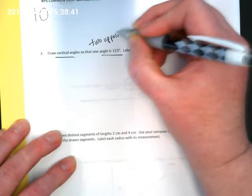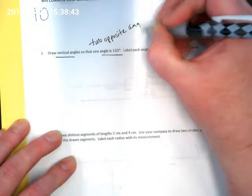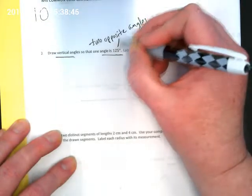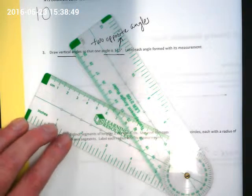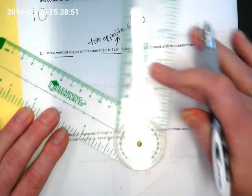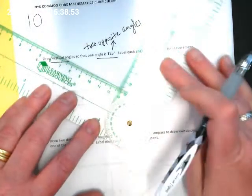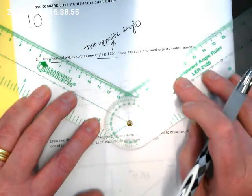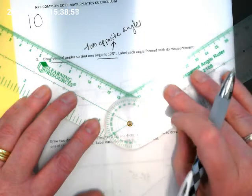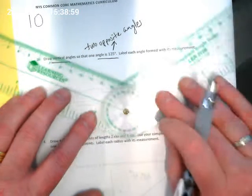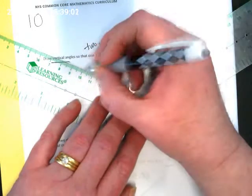We're going to keep going here, drawing vertical angles so that one angle is 125 degrees. Well, what do we know about vertical angles? If one angle is 125 degrees, we're going to have two opposite angles that are 125 degrees.